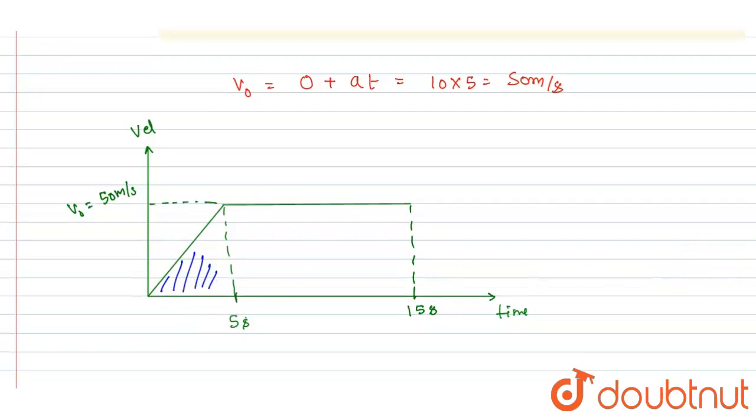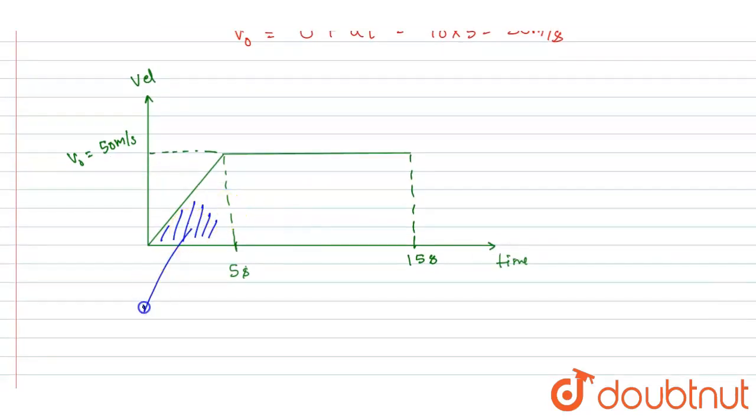If you see the area of this triangle, you can calculate it as half into base into height. So A1 is half into base length 5 into height 50. So it will be 50 into 5, which is 25 into 5, equals 125 meters.